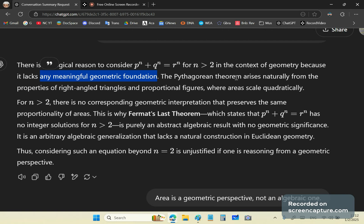The Pythagorean theorem arises naturally from the properties of right-angled triangles and proportional figures, where areas scale quadratically. I would say, where areas scale in terms of squared. Yeah, that's what it means there. It means that if you have an area, it comes from taking the square of two arithmetic means.